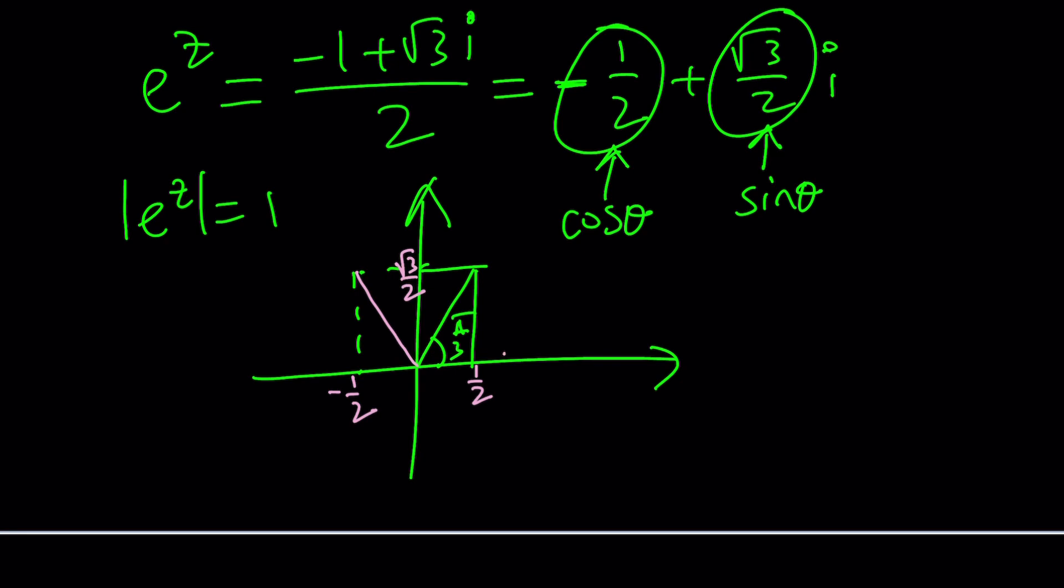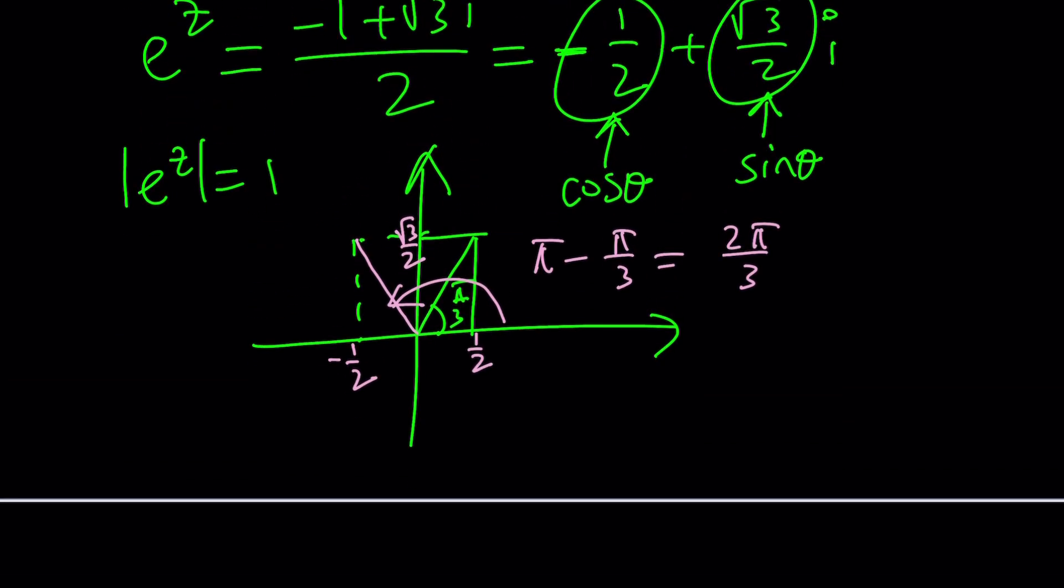So what does this mean? This means that our angle is actually pi minus pi over 3, which can be given as 2 pi over 3. That's how I usually find it. Just find the reference angle between 0 and pi over 2, and then just reflect it, flip it, extend it, whatever, to make it work. Good.